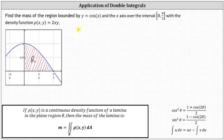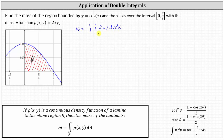The mass M is equal to the double integral over the region R of two xy dy dx. To determine the limits of integration, the limits for y must be functions of x. Integrating with respect to y means we integrate vertically first. The region R is bounded below by y equals zero and above by y equals cosine x, so the limits for y are from zero to cosine x. The limits for x are from zero to pi divided by two.